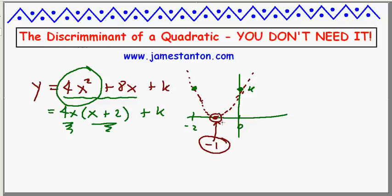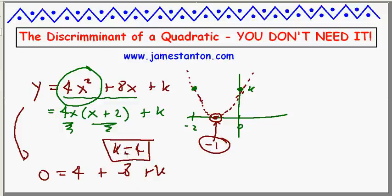So what I really want from this picture is a value of k so that when I put in negative 1, 0 comes out. Well, let's put x equals negative 1, 0 for y and see what it tells us. So 0 would have to equal 4 times negative 1 squared plus 8 times negative 1 plus k. So 0 equals 4 minus 8 plus k. That tells me k equals 4 does the trick.